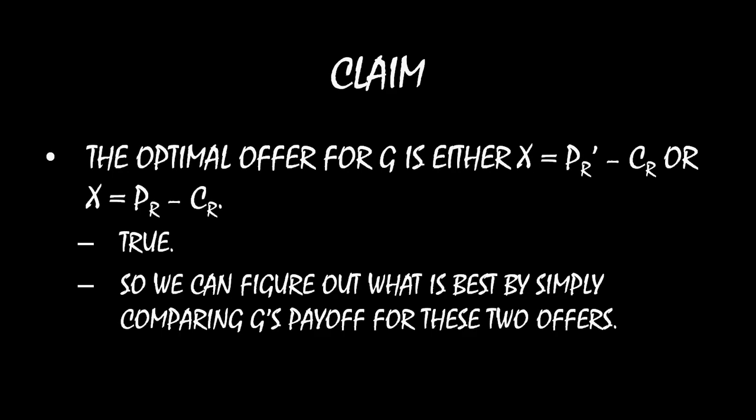That leaves us with just the two options. The claim is true: either X equal to PR prime minus CR is going to be best, or X equal to PR minus CR is going to be best. Because we've eliminated an infinite number of possible settlements and reduced it to just two, we can compare those two offers and see which one pays more as the government. Option one is to offer PR prime minus CR; option two is to offer PR minus CR.